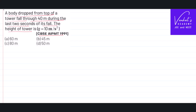Let us try to understand what the problem is saying. A body is dropped, that means its initial velocity is equal to zero, from the top of the tower, such that in the last 2 seconds it has covered a distance of 40 meters. Then what is the total height from which it is falling?